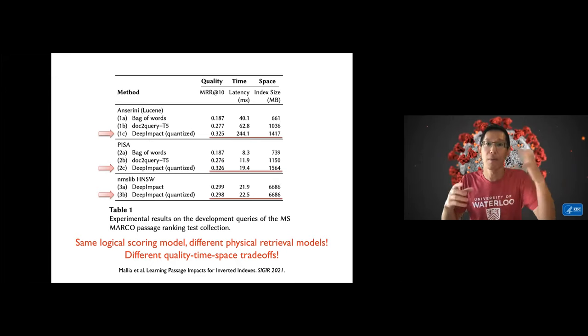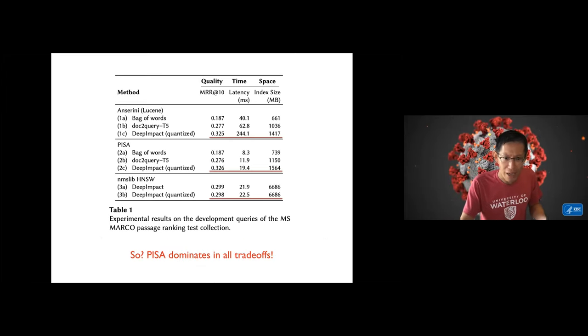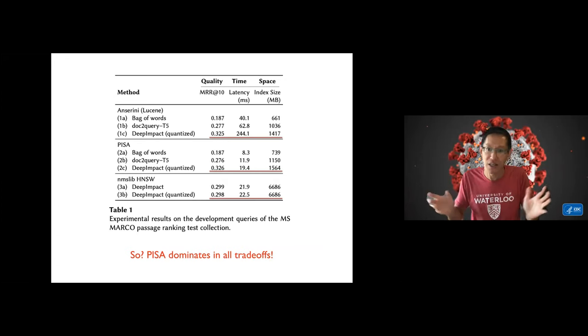You find out that if you compare between Anserini and PISA, PISA is much faster, they're about equally effective, and index size is about comparable. If you compare for example Lucene against HNSW, you see that HNSW is less effective, it's faster, but requires a larger index. If you sort of look through these results, you'll come across the realization that PISA dominates in all the trade-offs. It's just as effective, it's fast, and index size is reasonably small.